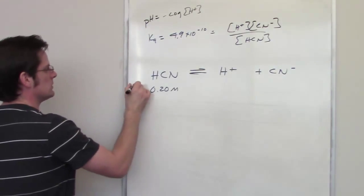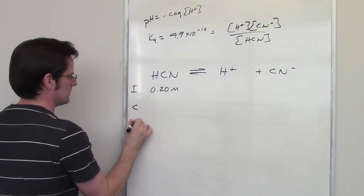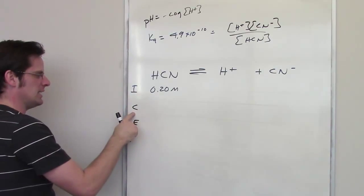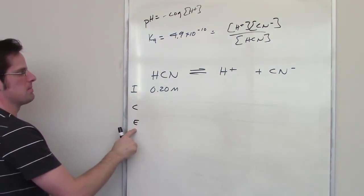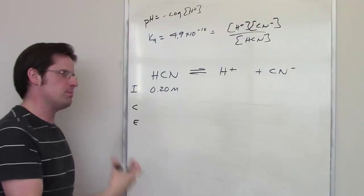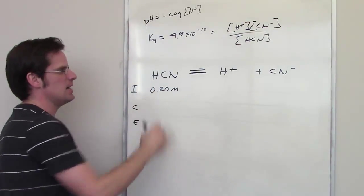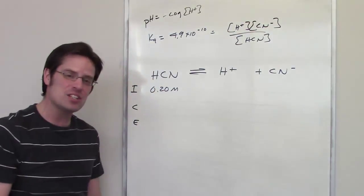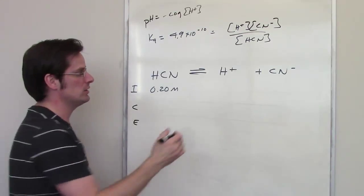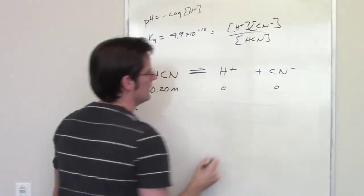Well, we have to do an ICE table. ICE, of course, stands for Initial Change and Equilibrium. So at initiation, I throw in 0.2 moles per liter of HCN. How much H+, how much CN- do I have? Well, at initiation, I've got 0 of these.